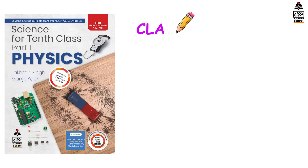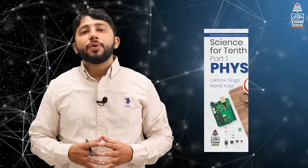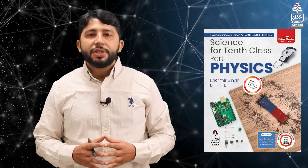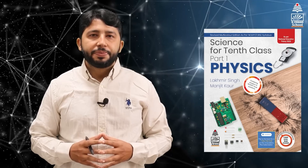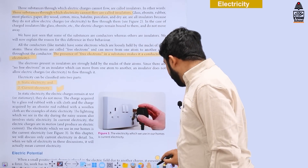Hello everyone! In the first part of this video, we learned how to work with electricity and what are the related charges, conductor, insulator, etc. Now, how to make these charges move? We want to understand that. If you want to understand this topic, you can follow Lakmeer Singh and Manjeet Kaur's 10th class physics book published by S. Chand Publishing. Now, let's start with the electricity chapter with the definition of electric potential.